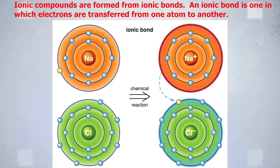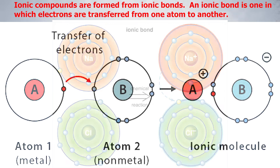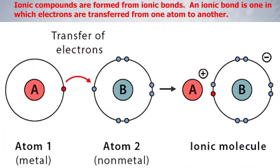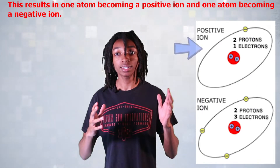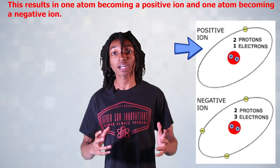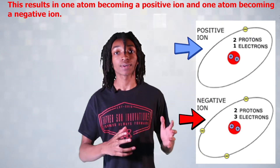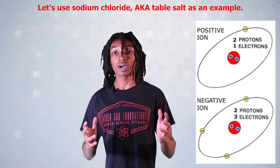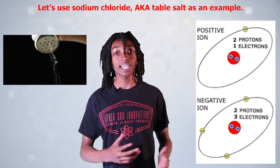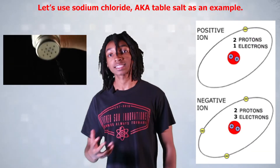Ionic compounds are formed from ionic bonds. An ionic bond is one in which electrons are transferred from one atom to another. This results in one atom becoming a positive ion and one atom becoming a negative ion. Let's use sodium chloride, also known as table salt, as an example.